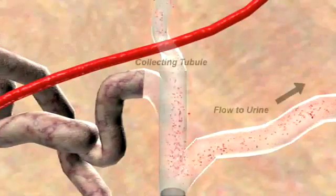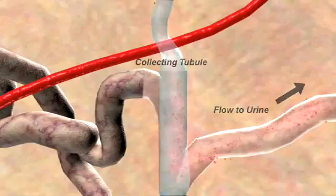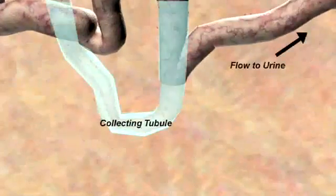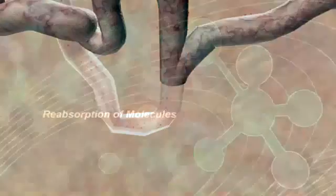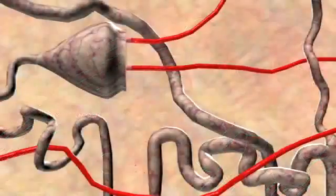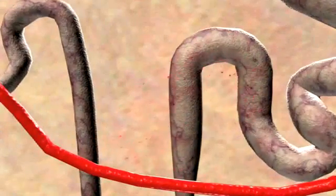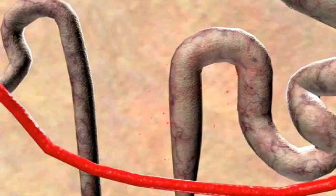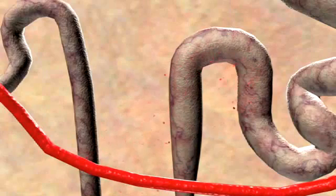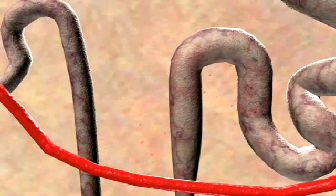The last section of the nephron is called the collecting tubule. Sodium channel blockers and aldosterone antagonist diuretics act here. At each site along the nephron tubule, certain molecules are able to permeate the wall and leak out into the interstitium. These molecules will be reabsorbed into the peritubular capillary and be returned to the systemic blood supply.